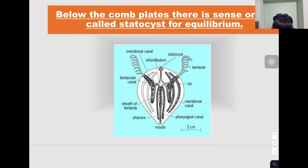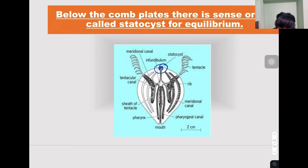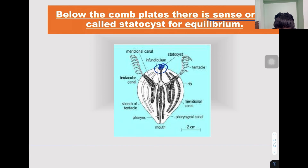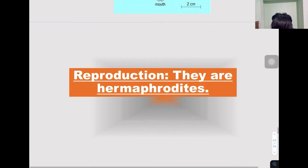Below the comb plates there is a special structure called a statocyst. This is a sensory organ which helps to maintain equilibrium or balance. The statocyst is only present in Ctenophora and is one of its distinguishing features.